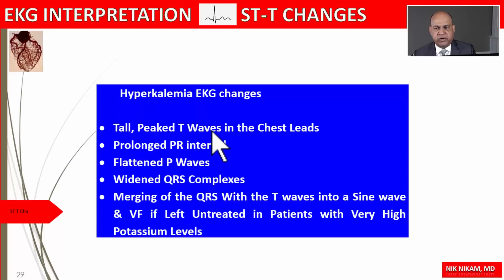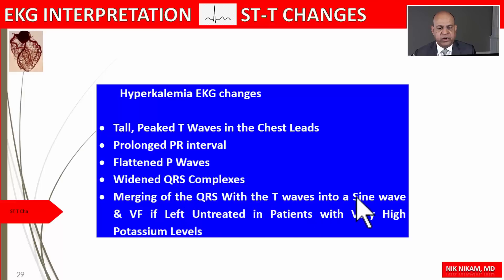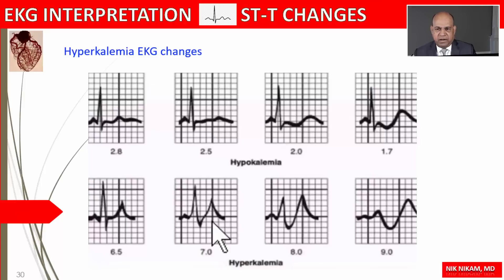Some findings we see in patients with hyperkalemia include tall peaked T waves in the chest leads. There may also be a prolonged PR interval. With increasing potassium levels, we can see flattened P waves, widened QRS complexes, and eventually merging of the QRS with the T waves into a sine wave. If the potassium level continues to rise, the patient may develop ventricular fibrillation and cardiac arrest.